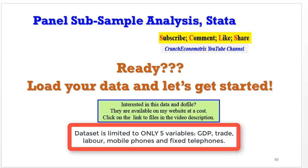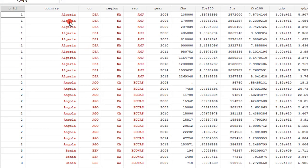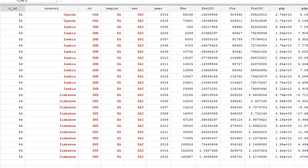So if you are ready, if you have a data similar to mine, please do so and let's get started. As explained earlier on, these are the countries in the sample from Algeria number one up to Zimbabwe number 54.